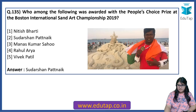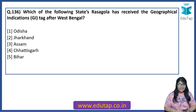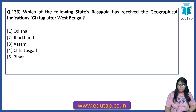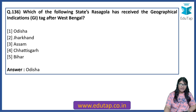Which of the following state's Rasagulla has received the Geographical Indications (GI) tag after West Bengal? West Bengal was the first state to receive a GI tag for Rasagulla, but a second state has also been conferred with the GI tag — there was a tussle going on for some time. The answer is Odisha.